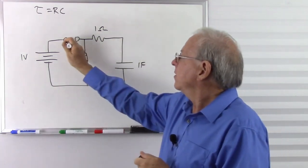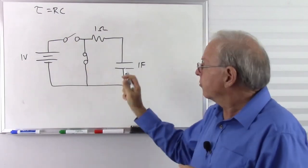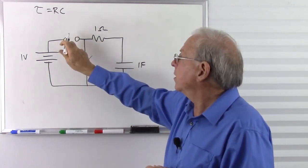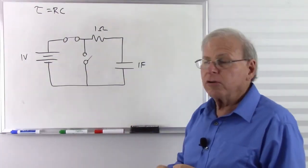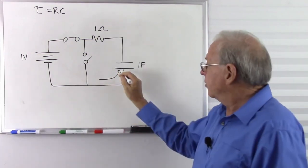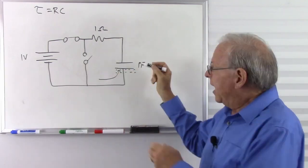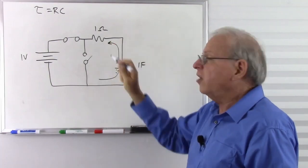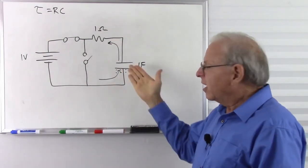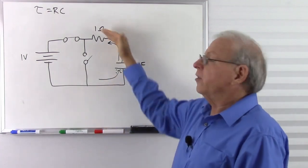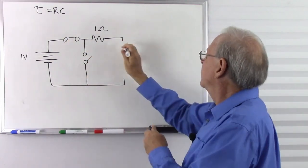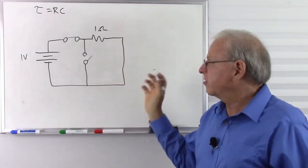We start with an open switch and a closed discharge switch to ensure the capacitor is fully discharged. We open that switch and close this one. At the moment the switch closes, we get a surge of electrons flowing to the capacitor — they pile up on one side, driving electrons off the other side. So electrons go in and the same number come out, which looks like a short circuit.